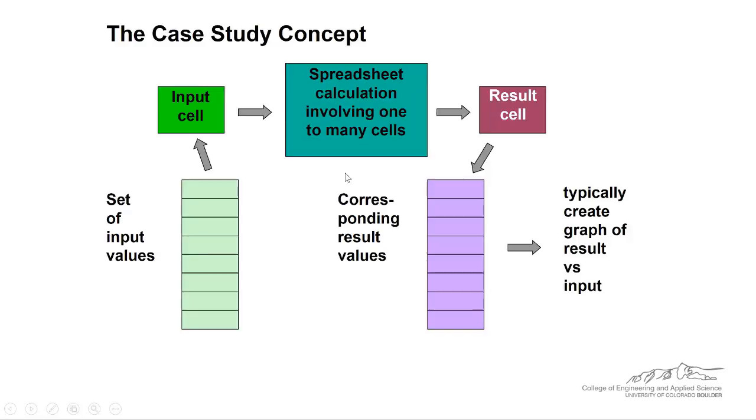Then you have one or more calculations and you get an output or a result cell. And then that result cell is linked to the corresponding result values. So you're seeing what effect do the input values have on the output.